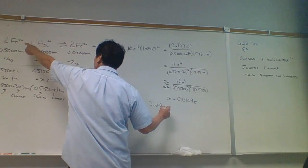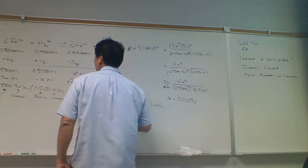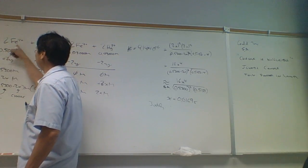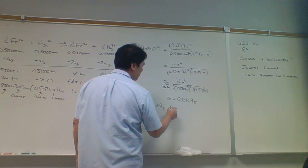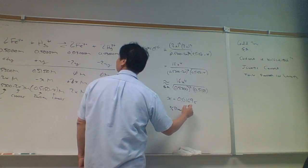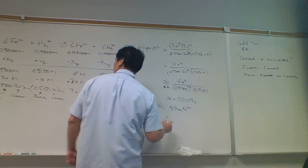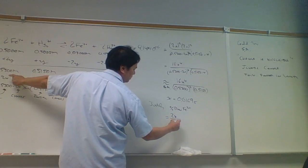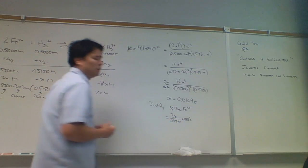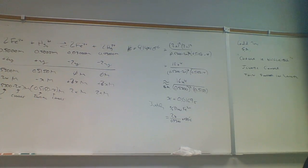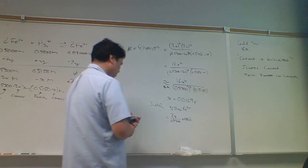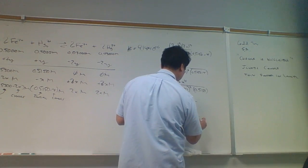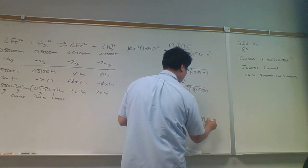I'm going to look at the percent change in the iron first. We call this the percent reaction. The percent reaction of the iron 3+ is equal to the change, which is 2x, over the initial 0.5300, times 100%. I have this left in my calculator — I'm going to do times 2 divided by 0.53 times 100. I get 6.398%.